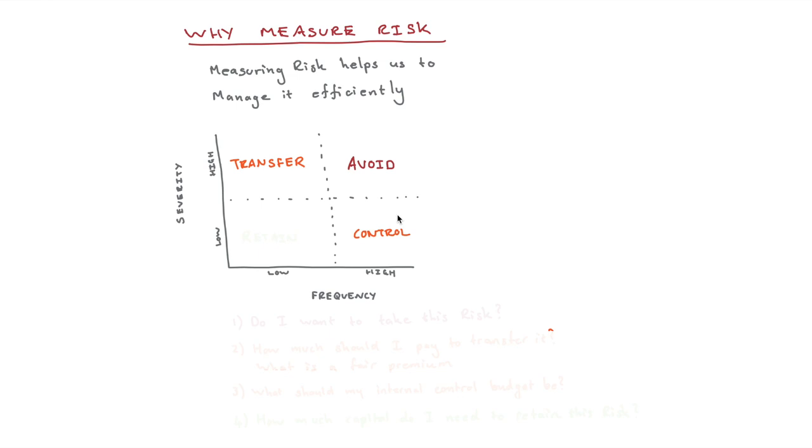And then if frequency is low and severity is low, then we might say, you know what, it's worth maybe just retaining this risk, and not necessarily changing our behavior, because frequency and severity is low, it's not worth the cost. And that's the thing is, the more accurate we can get in measuring the risk, the more efficiently we can manage it. So at a very high level, we can say should we avoid, transfer, retain, or control.